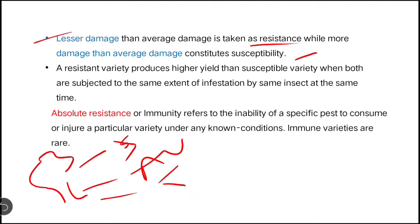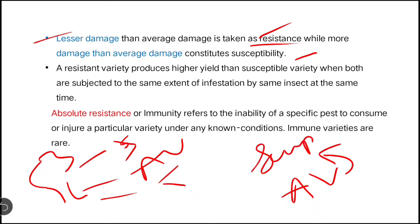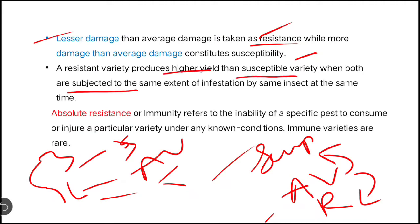So here are two definitions: if you have more damage than average damage, it is called susceptibility; if you have less damage than average damage, it is called resistant. A resistant variety produces higher yield than the susceptible variety when both are subjected to the same extent of infestation.